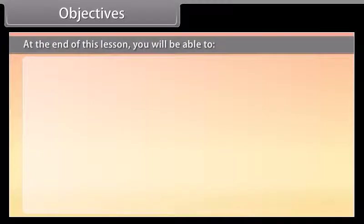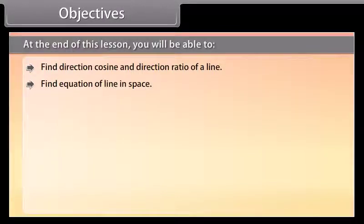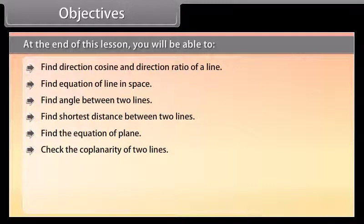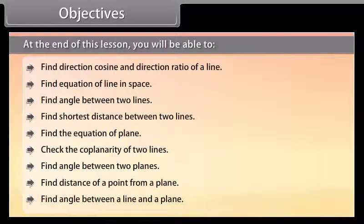Objectives. At the end of this lesson you will be able to: find direction cosine and direction ratio of a line, find equation of line in space, find angle between two lines, find shortest distance between two lines, find the equation of plane, check the coplanarity of two lines, find angle between two planes, find distance of a point from a plane, and find angle between a line and a plane.